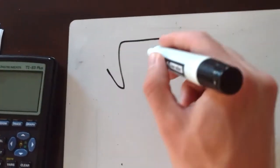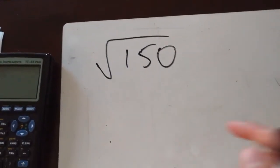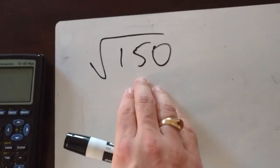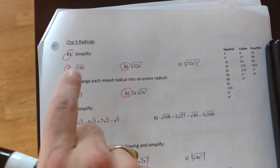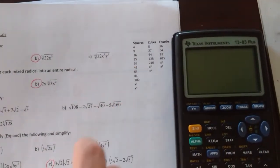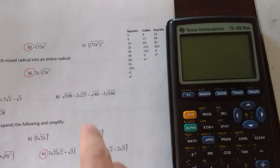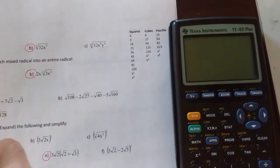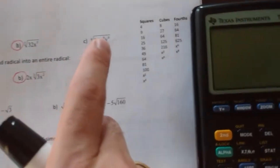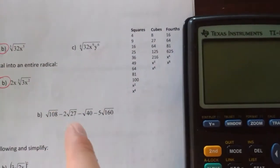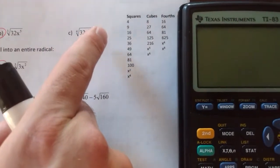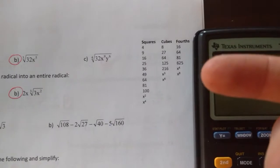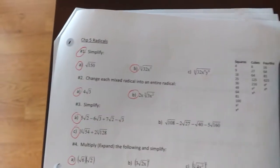When we're asked to simplify a radical, we're looking to split it up and make it a mixed radical — a part on the outside and a part on the inside. Because it's the square root, we need to think of our perfect squares. We want the biggest perfect square that goes into 150. You can generate these yourself: 2 squared is 4, 3 squared is 9, 4 squared is 16, 5 squared is 25, and so on. The biggest perfect square that goes into 150 is 25.